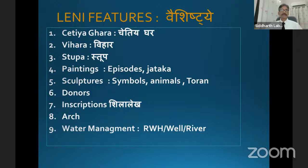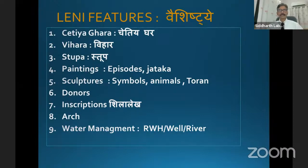You find inscriptions, and you find the arch — a very, very typical arch of Buddhist architecture. Most important is the water management. Why is it important? Because these monks were staying at a higher level — on some elevated mount. The main criteria was how to preserve water that can be used for the entire year. There were three options — rainwater harvesting, well, and river. If the first two options were not there, then the third option of river was there.